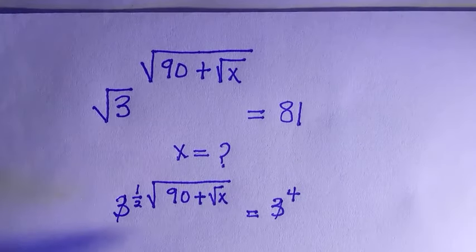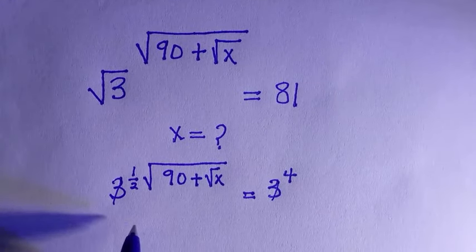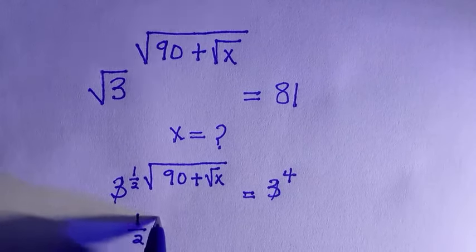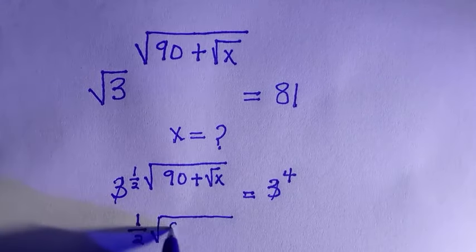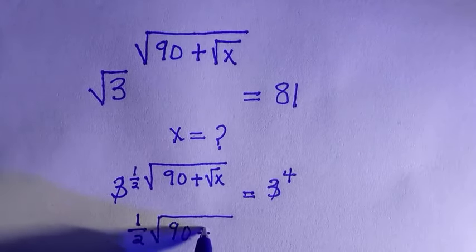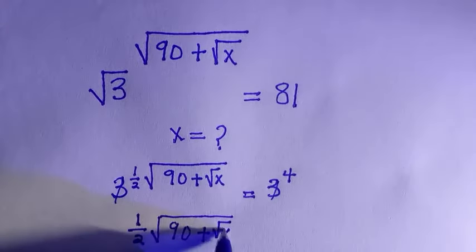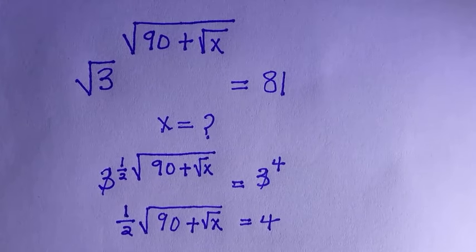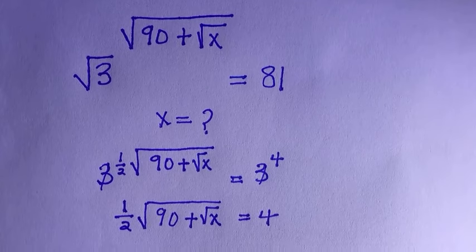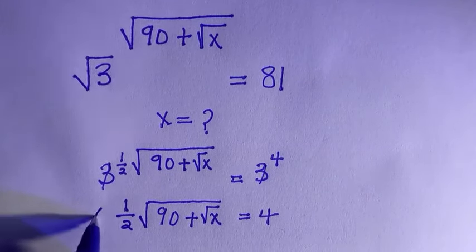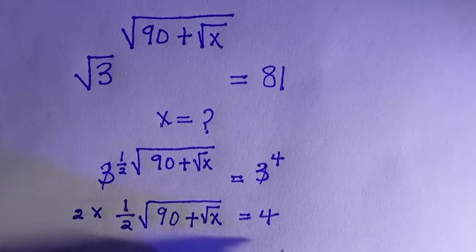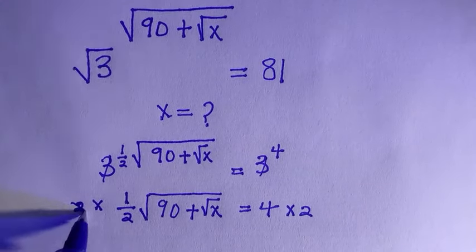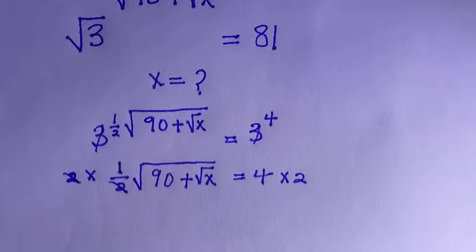Then we are going to have 1 divided by 2 times the root of 90 plus root x, everything equals to 4. And I can do two things here, so either I multiply it by 2 or I take the square of both sides. Let's multiply. If these two cancel, then we are going to have root of 90 plus root x, everything equals to 8.